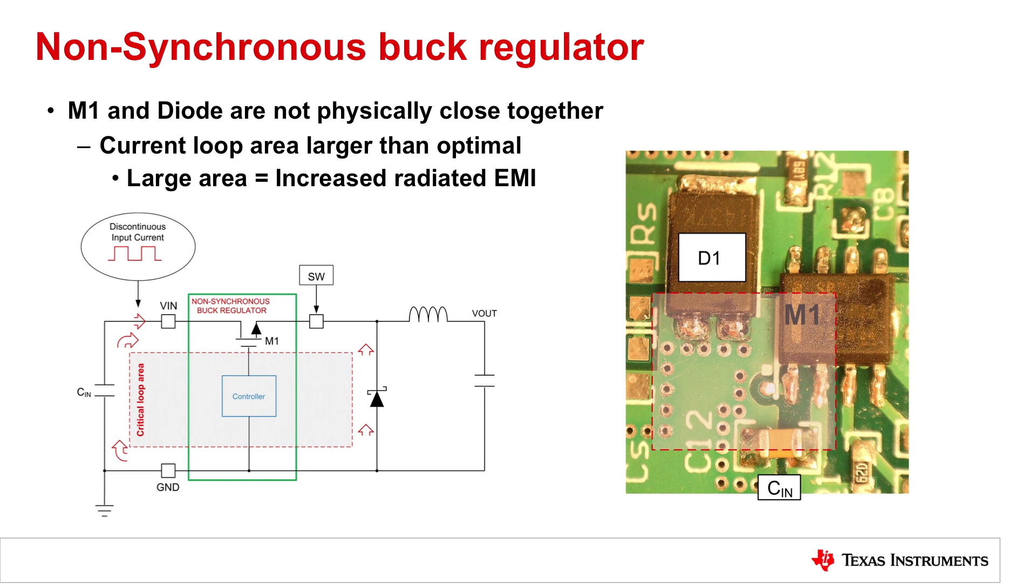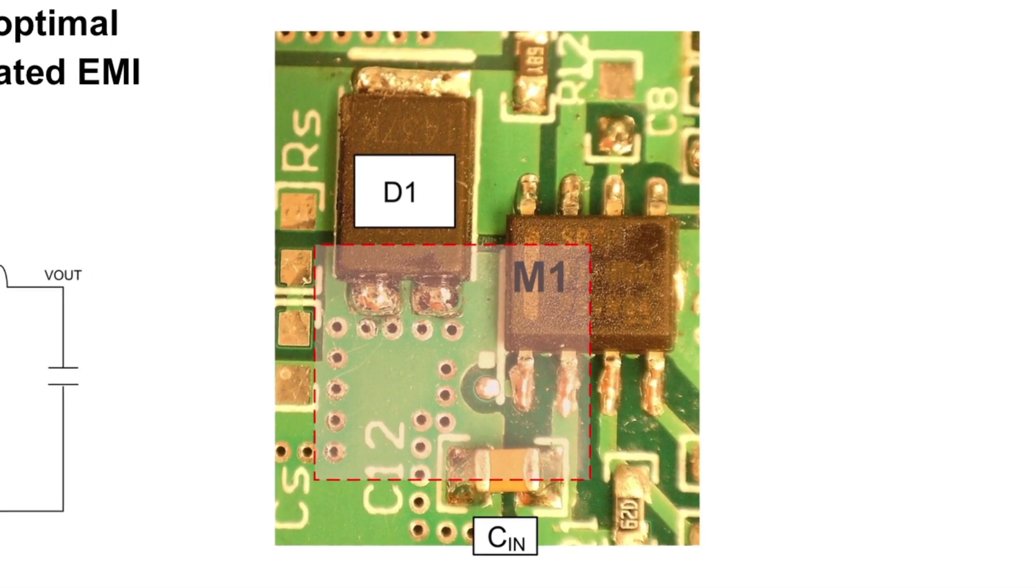In the non-synchronous converter, it's easy to see that we have the Schottky diode designated as D1, which is actually a little bit larger than the IC itself and quite a bit larger than the input capacitor. So it makes it a little bit difficult to get all the components as close as possible, a little bit more difficult than it is in a synchronous converter, but it's not impossible to get a good tight loop. But you can see here from the dotted box that represents the critical loop area, that it's always going to be a little bit more than for a synchronous converter.